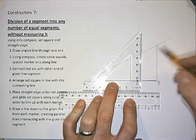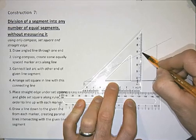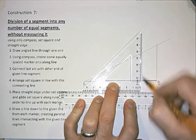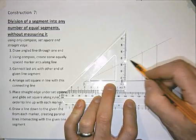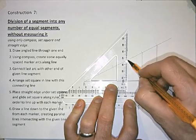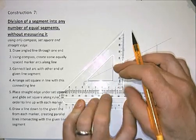So without moving the ruler, I should be able to now draw further lines down from each of these equally spaced marker arcs down to my line segment.